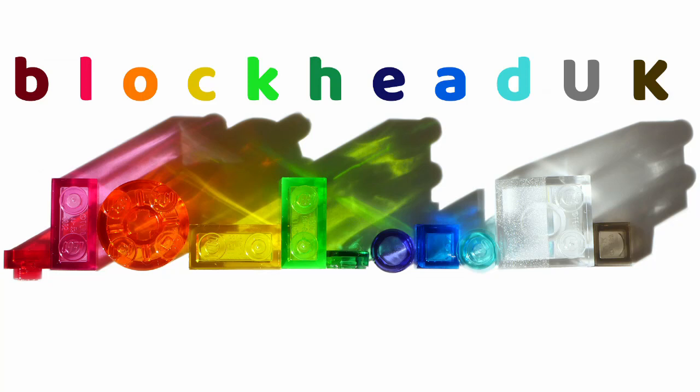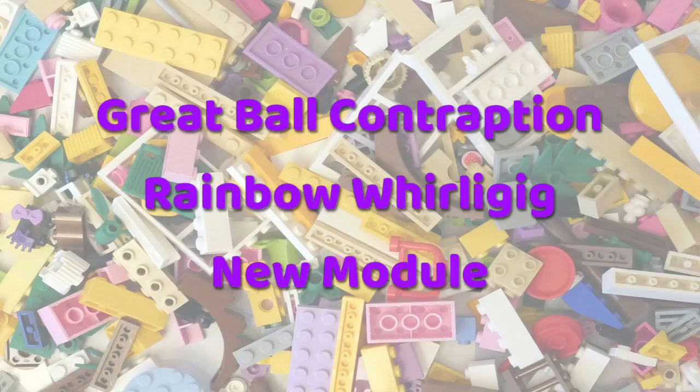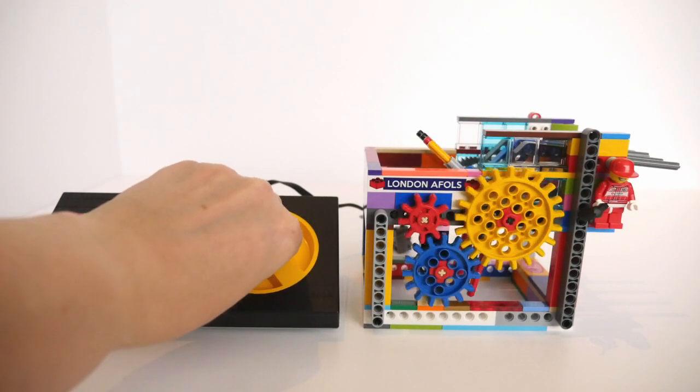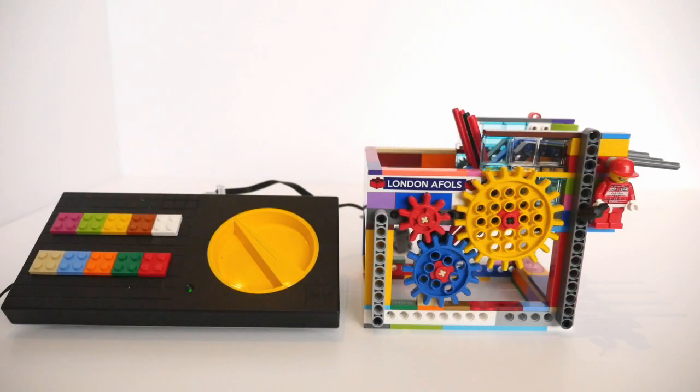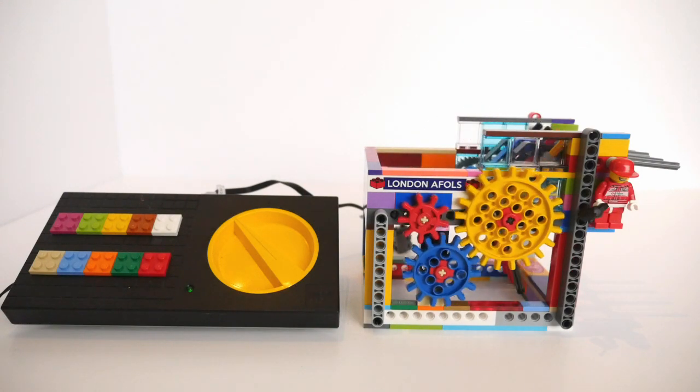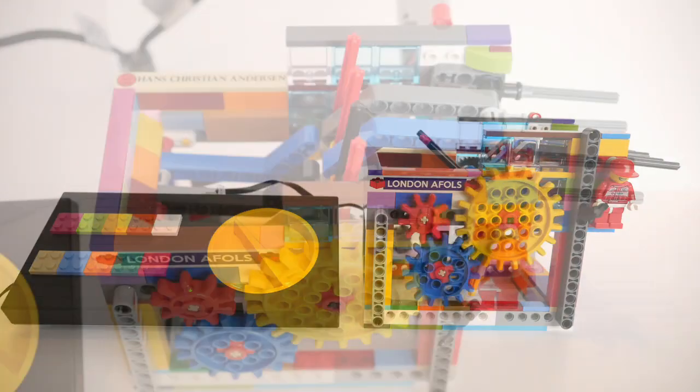Hello folks, Kaz here from Blockhead UK. This video shows you one of my new Great Ball Contraption modules, the Rainbow Whirligig. It is constructed to a design by Matt Norman at greatballpit.com where you can download free instructions.